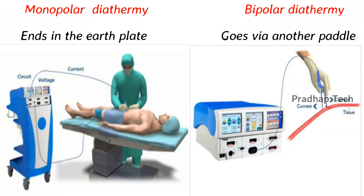In monopolar, the current comes from the tip and ends in the earthplate. In bipolar, the current comes from one paddle and goes via another paddle.